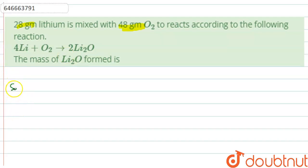For solving this question, we use the concept of limiting reagent. The reaction is 4Li + O₂ → 2Li₂O. Given 28 grams of lithium and 48 grams of O₂.